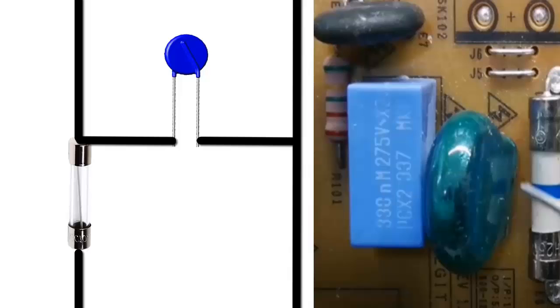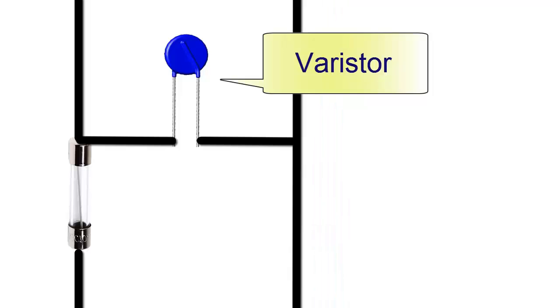The varistor's lifespan is primarily affected by the consumed energy. As energy consumption increases, its lifespan decreases, and its ability to protect against spikes is reduced. Connecting several varistors in parallel can improve reliability.